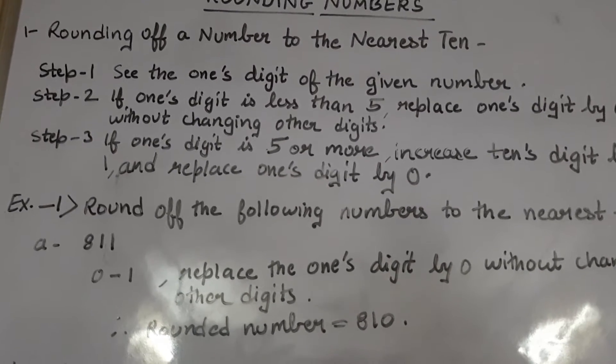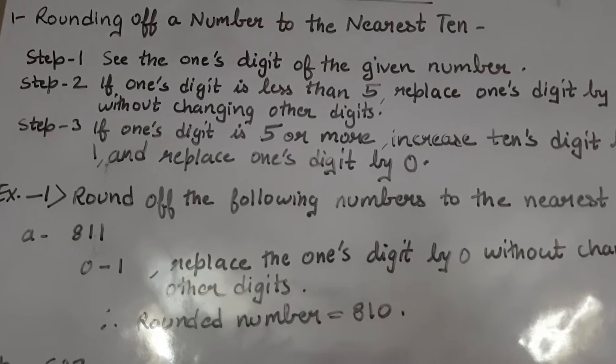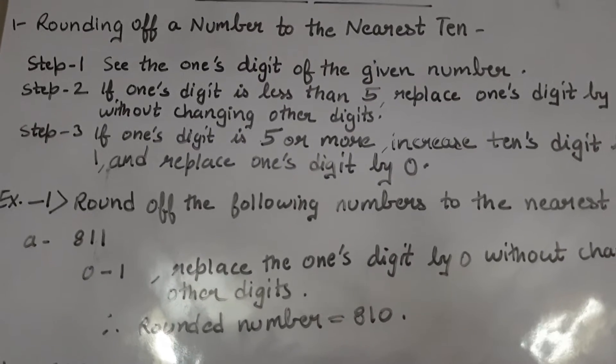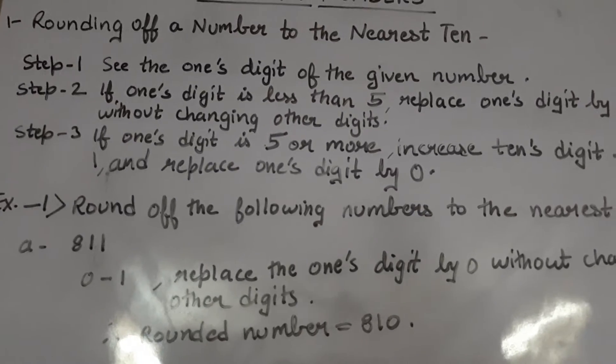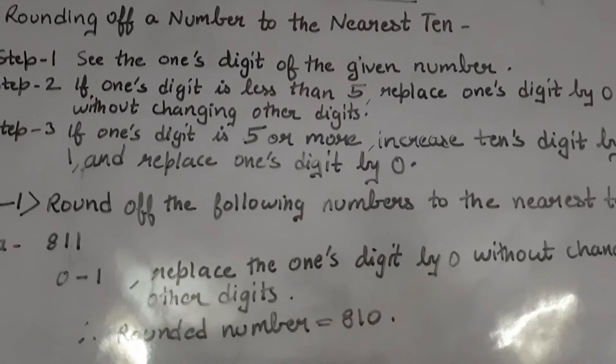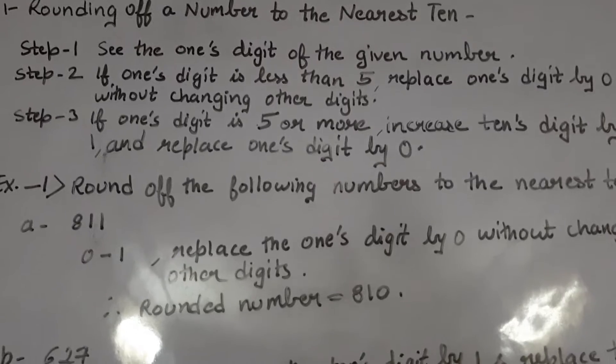So rounding of a number to the nearest 10, we should keep 3 steps in mind. So what are the steps? Step 1 says: see the 1's digit of the given number. So whatever number is given, always check the 1's position.